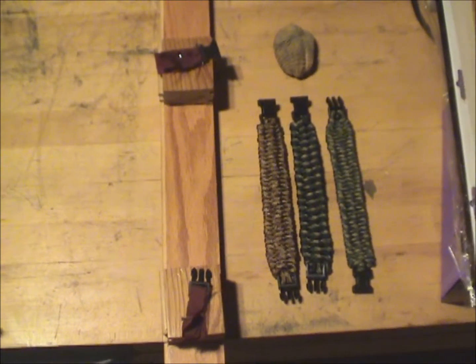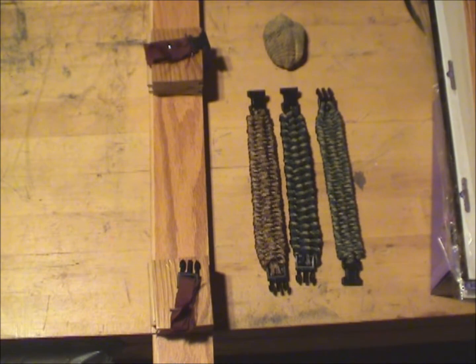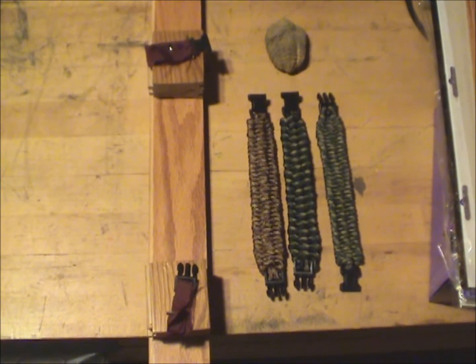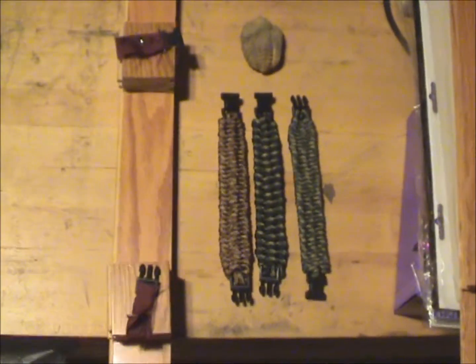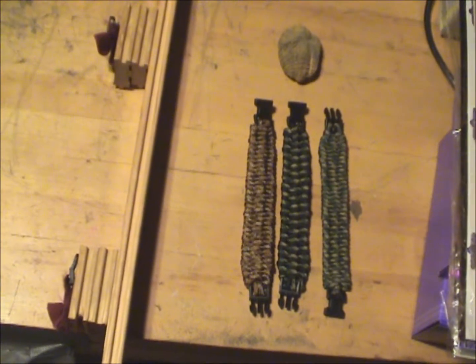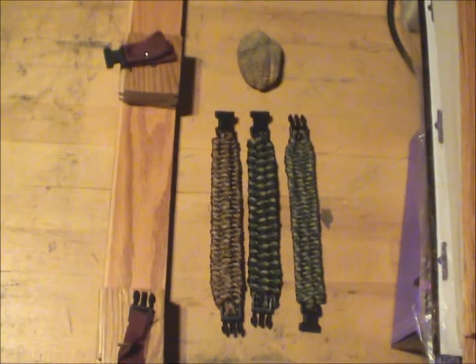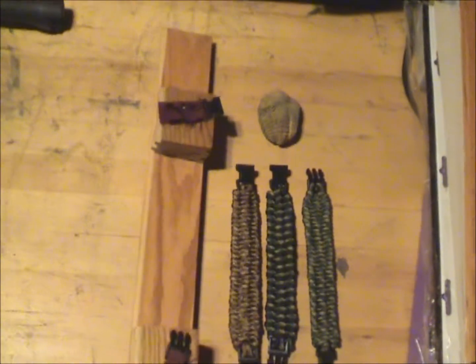It was just recently he got into making paracord bracelets, and I made him this wooden jig from leftover pieces of hardwood flooring. I mentioned in another video I've got a lot of hardwood flooring around.